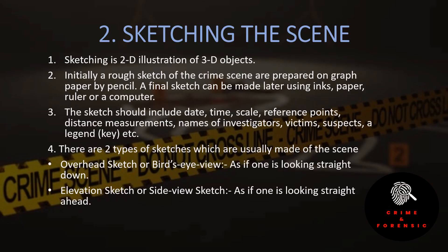Sketching the scene. Sketching is a 2D illustration of 3D objects — when we make a sketch, we are representing a 3D object in 2D form. Initially, a rough sketch of the crime scene is prepared at the scene on graph paper using a pencil, as there is not enough time for a careful detailed sketch at the crime scene. A final sketch can be made later using inks, papers, rulers, or a computer.